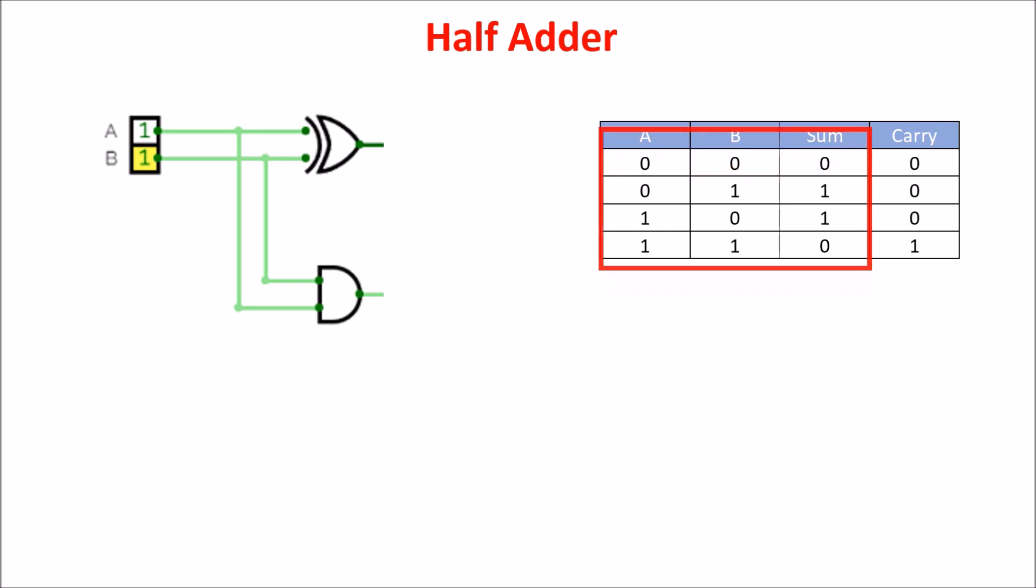In fact, the sum is 1 only if just one of the input bits is 1, and the carry is 1 only if both input bits are 1. With a half adder, we can sum just two bits.